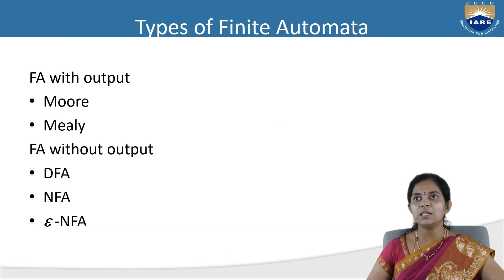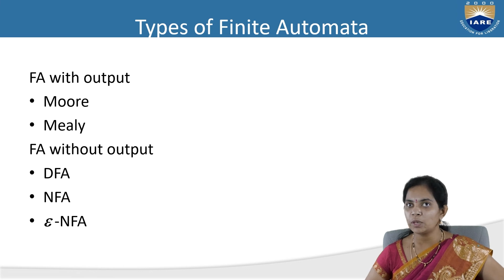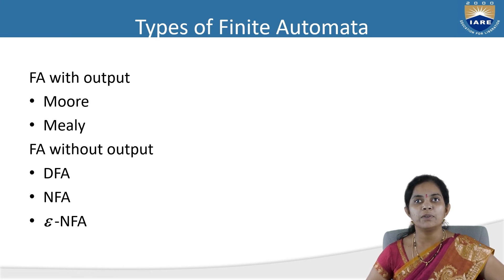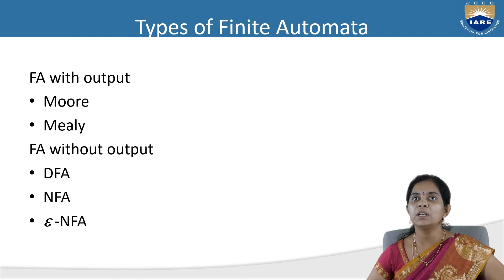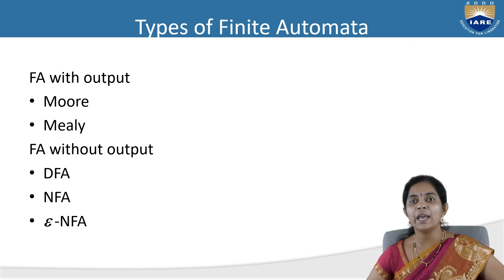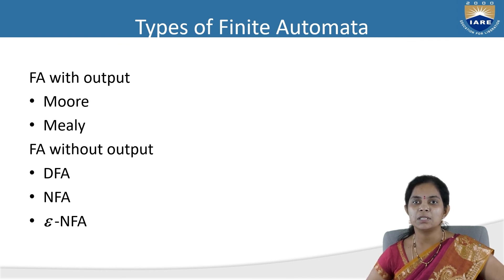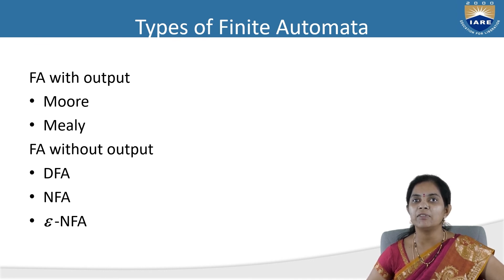What are the types of finite automata? There are two types: finite automata with output and finite automata without output. With output, we have two models: Moore and Mealy. Without output, we have three models: DFA, NFA, and Epsilon-NFA. We will discuss these in detail in further videos.